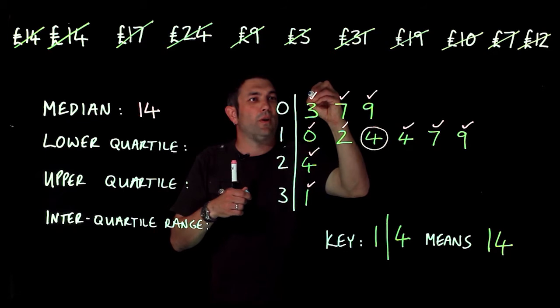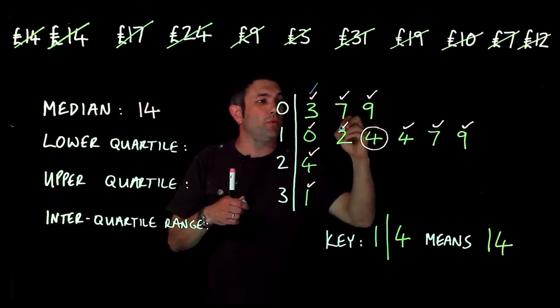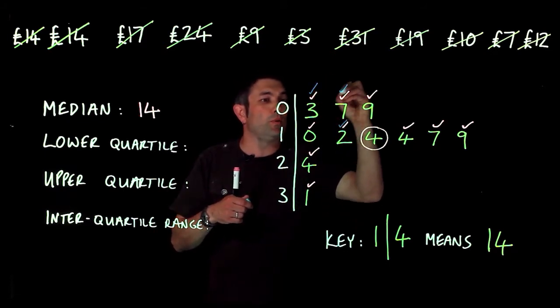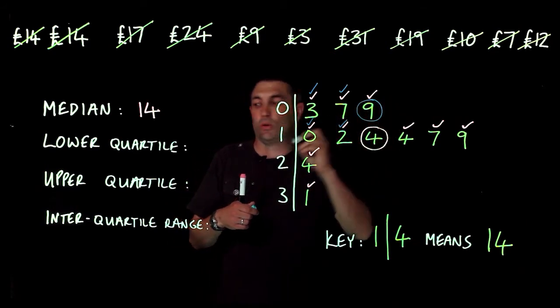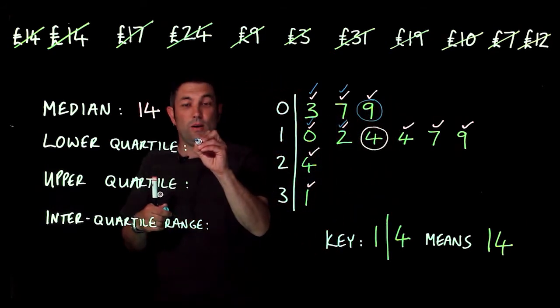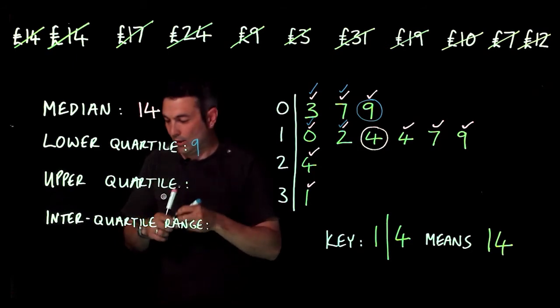If I cross off one from the beginning and one from the end repeatedly, here is the lower quartile. We get 9 as the lower quartile.